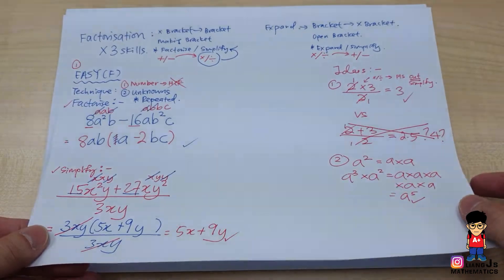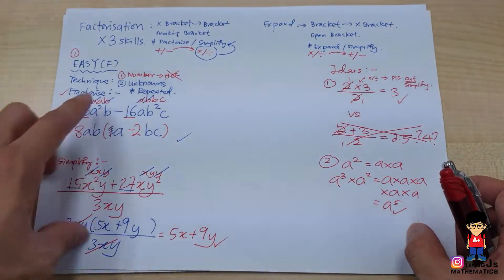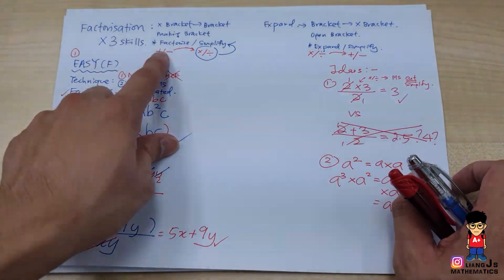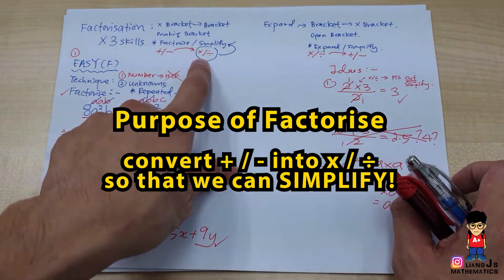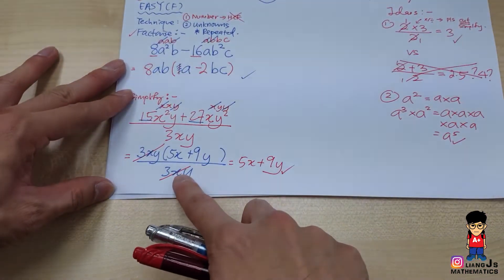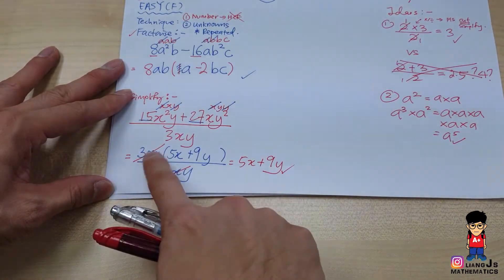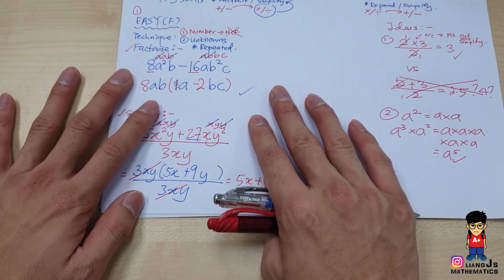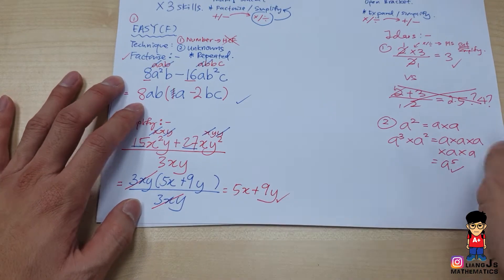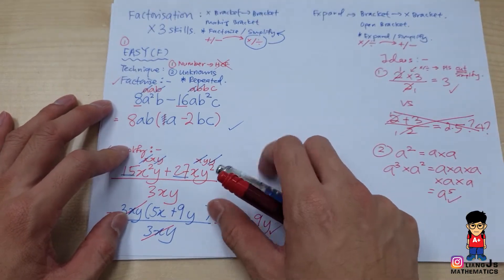Hi guys, I'm Liangji Mathematics here again. Let me show you — in the previous video we talked about factorization, and I did mention that the benefit of it is converting plus and minus back to times and divide, so that we can simplify them. You convert from a plus-minus expression into a bracket, which is a times relationship, and then you cancel to get your final answer.